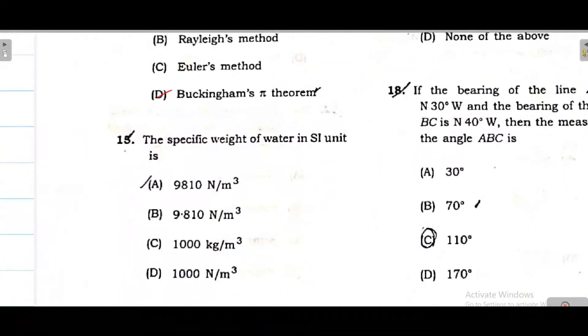Unit weight of water. Generally water's specific weight is 9.8 kilonewton per meter cube. If you take it in newton and multiply by 10^3, the answer will be 9810 newton per meter cube. Option A is correct.